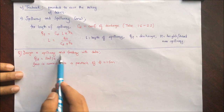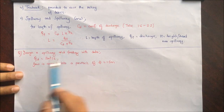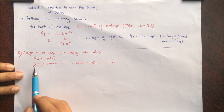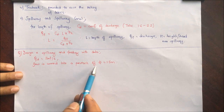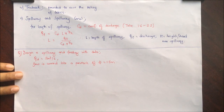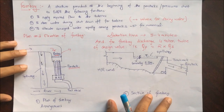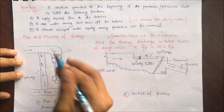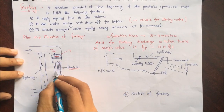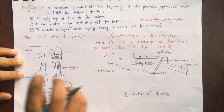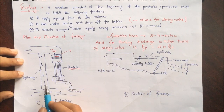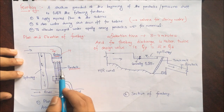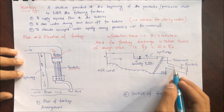We have a question: design a spillway and forebay with data Qd, that is design discharge, equal to 2 meter cube per second. Flow is carried into a penstock of diameter D equal to 1.5 meter. In this figure we will be designing a forebay, but the number of penstocks provided is only one, so the design discharge will not be distributed — it will be carried by a single penstock.